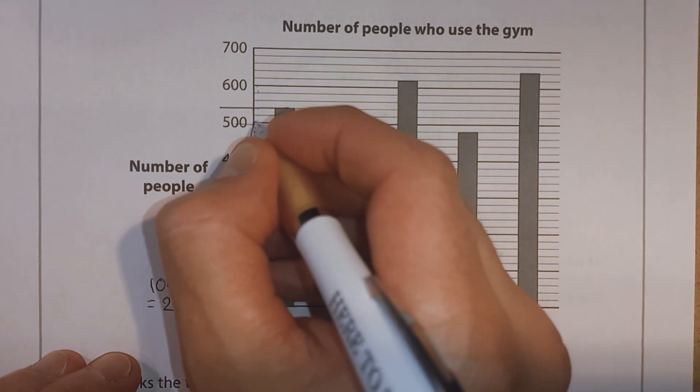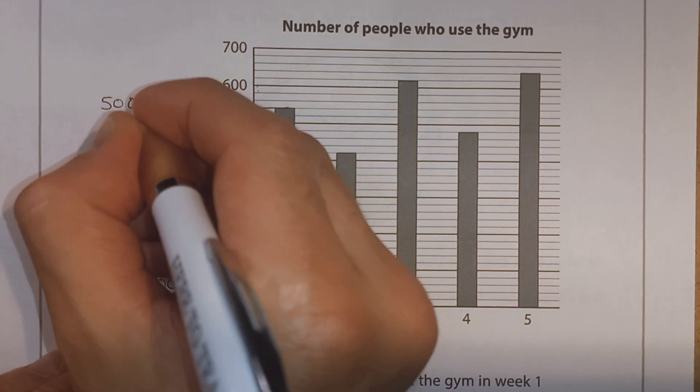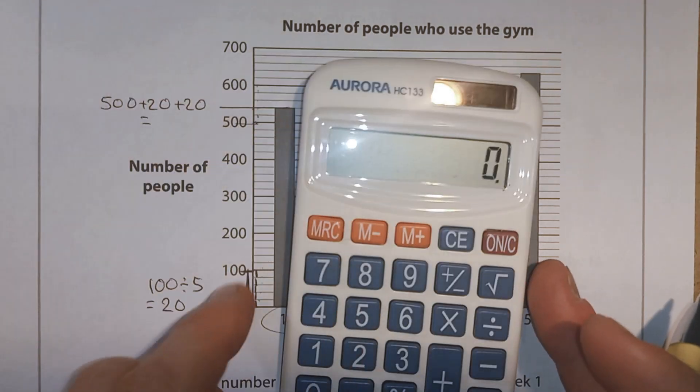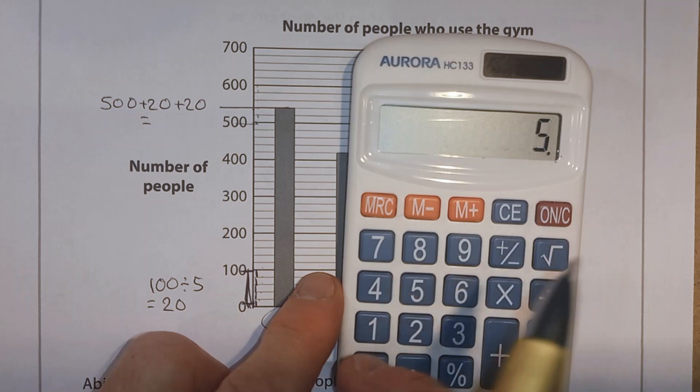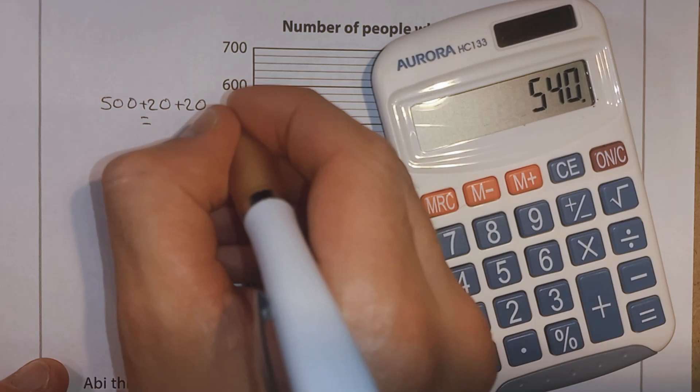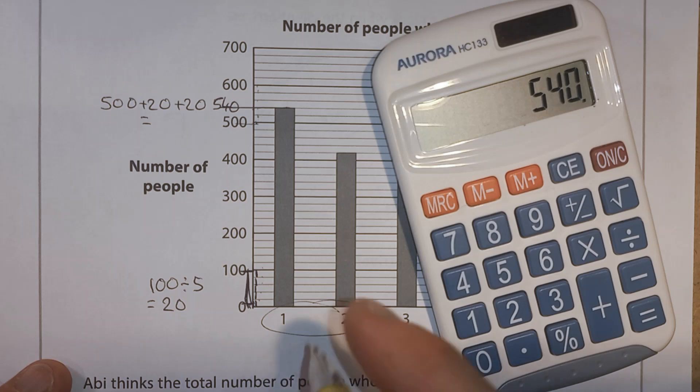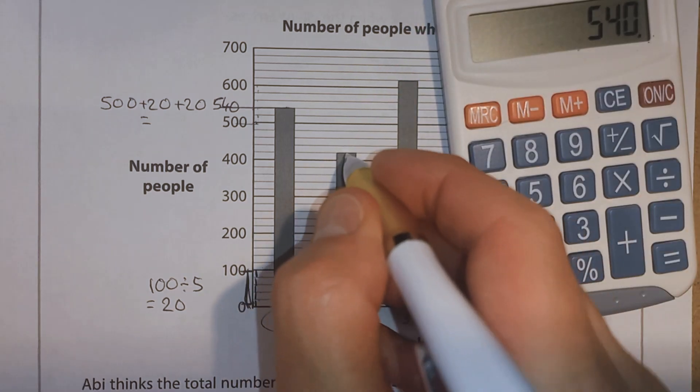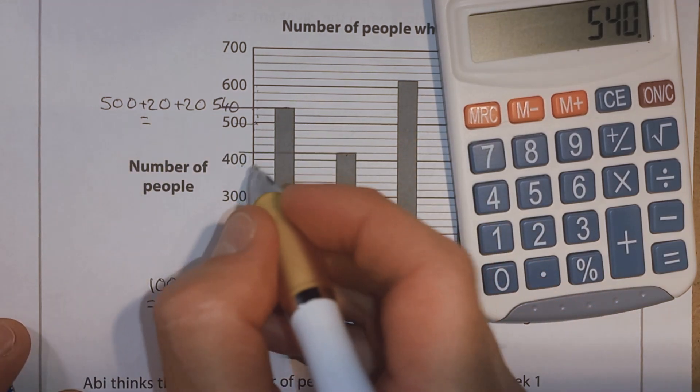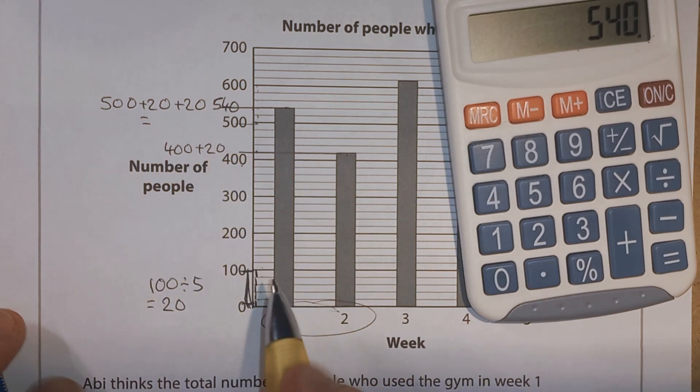So this, we've got 500, and then we've got 1, 2 sections. So in other words, it's 500 plus 20, which if we do on our calculator, is 540. Okay, so that's for week one. Now, what about for week two? Well, read across. We've got 400 plus 1 section. So we've got 400 plus 20. So that one's a bit nicer. Hopefully you can see if it's 400, actually, I can write that one there. 400 plus 20 is going to be 420.